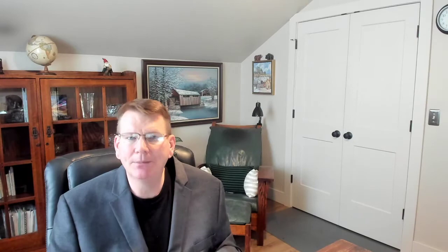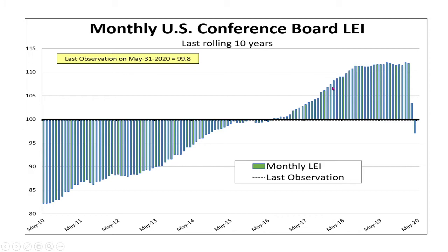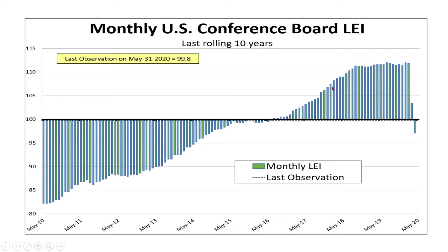The problem with these leading indicators is that if we just look at them month to month, or above/below 100, they really don't tell us the full story — we have to dig a little bit deeper. The best way I've found to dig deeper is to look at these indicators on a year-over-year basis. Why do I like that? We can see this indicator has a very good track record. When these year-over-year changes fall below zero, it has a very good track record at predicting recessions.